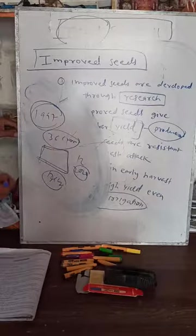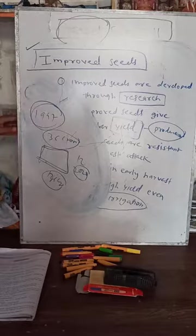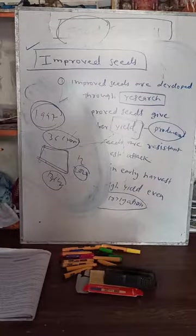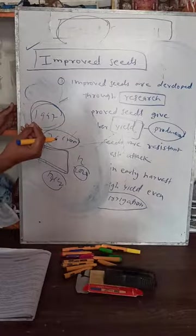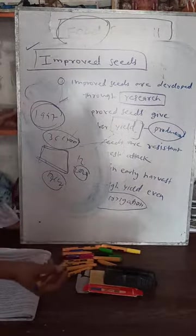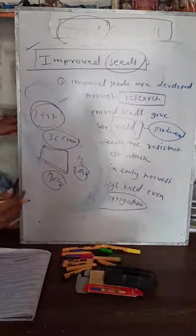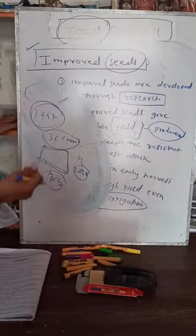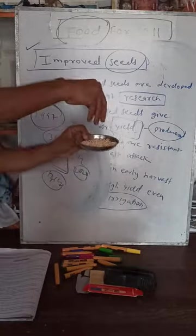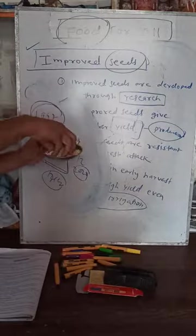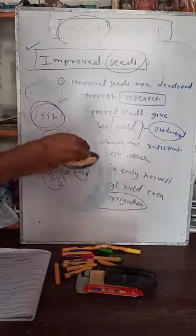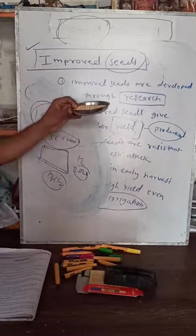Now in 2020, the land is the same but the population is 136 crore — still everyone is getting food, and today we are even exporting food grains to other countries. This is because of improved seeds. Scientists have researched and developed seeds where certain genetic traits have been changed, giving us more and better quality produce even from small farms.